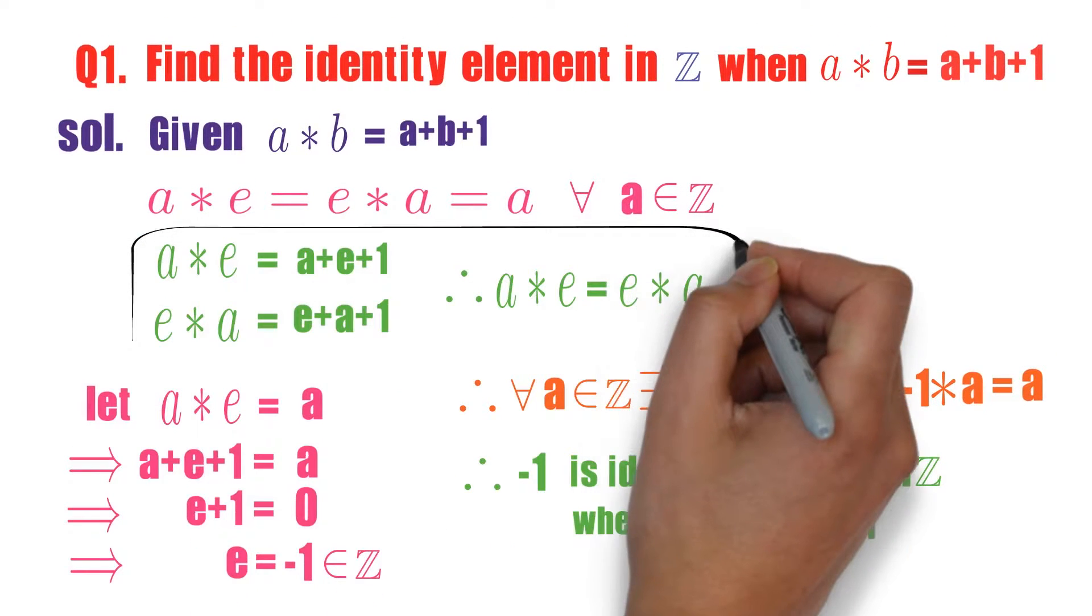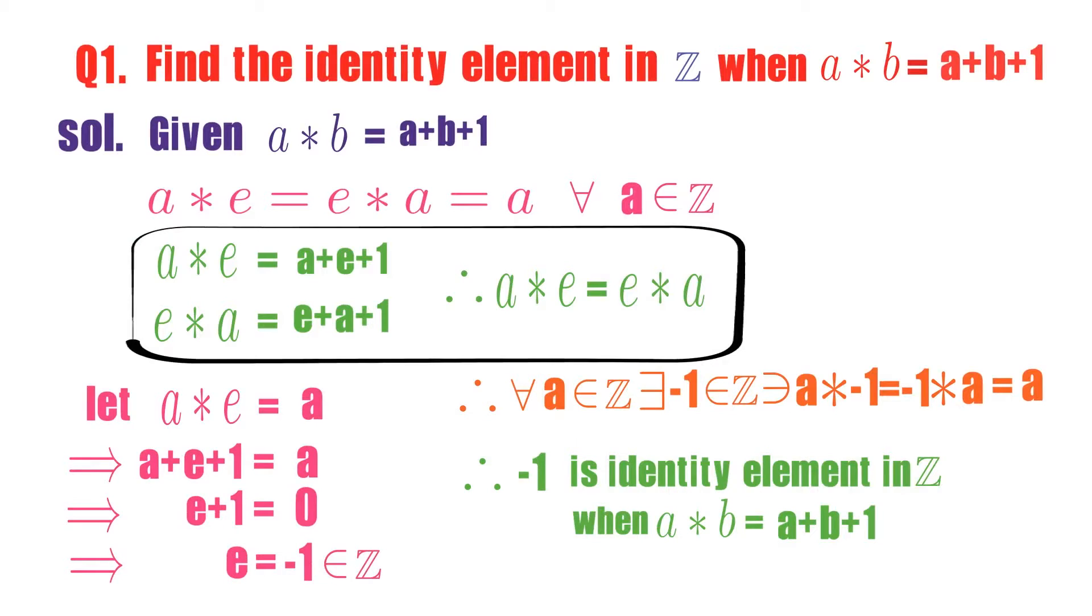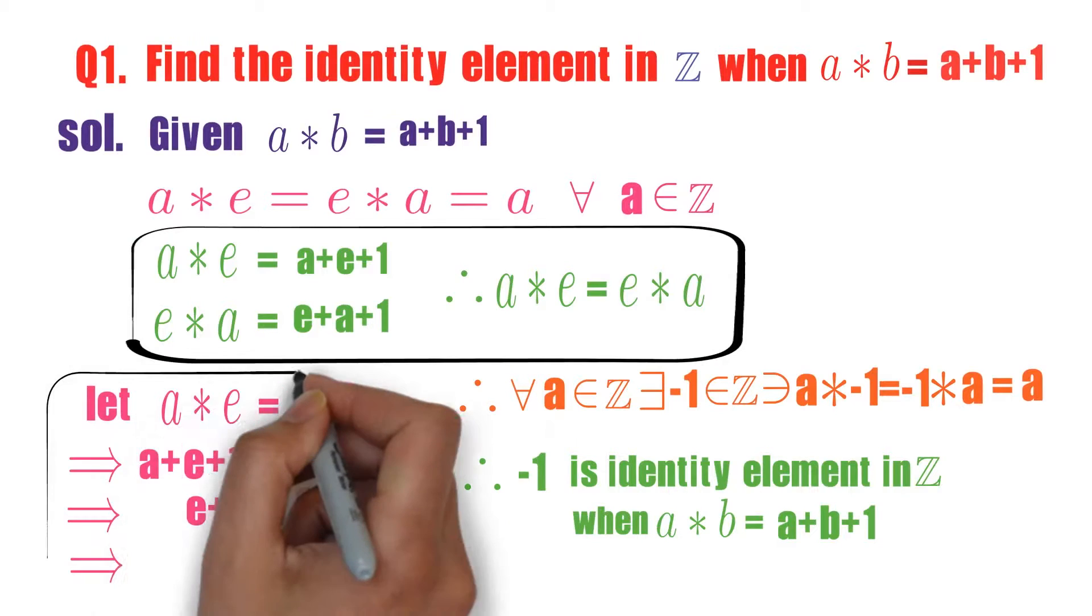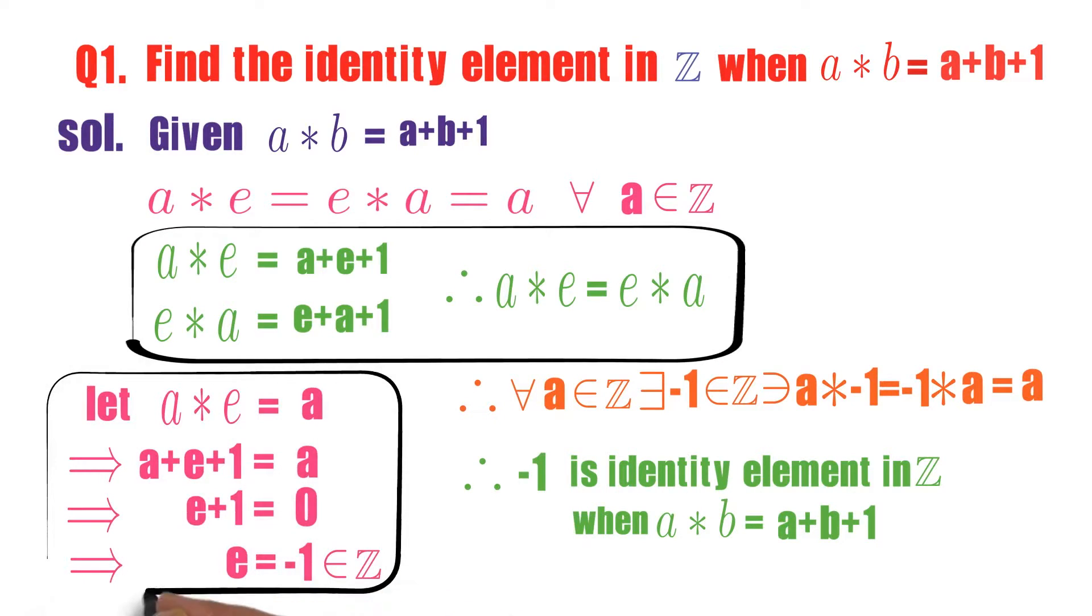Two things you have to keep in your mind: first check that a star e is same as e star a or not. Once it is true, move to the second point. What is the second point? You take either a star e equals a or e star a equals a and then proceed.